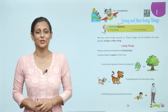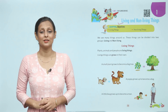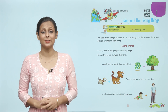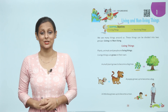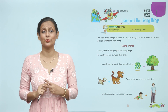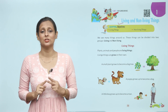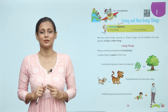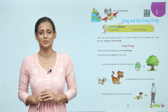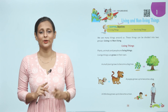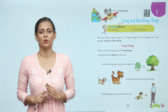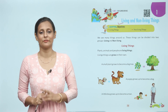Learning objectives: living things and non-living things. We see many things around us. These things can be divided into two groups: living and non-living. There are many different things which are divided into two categories: living and non-living.